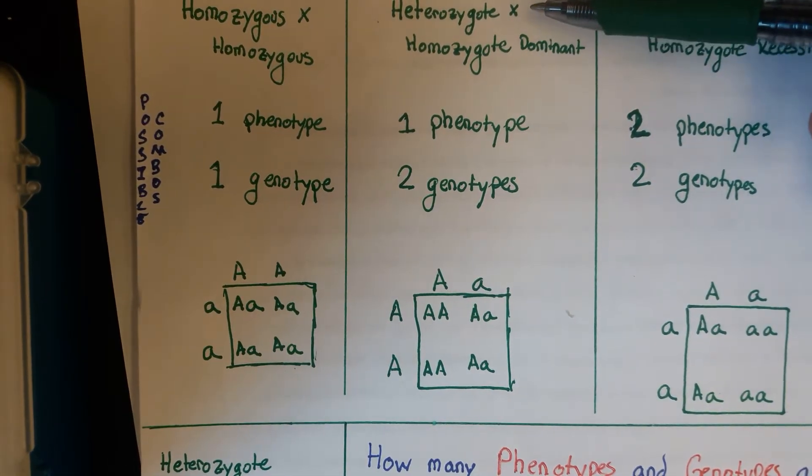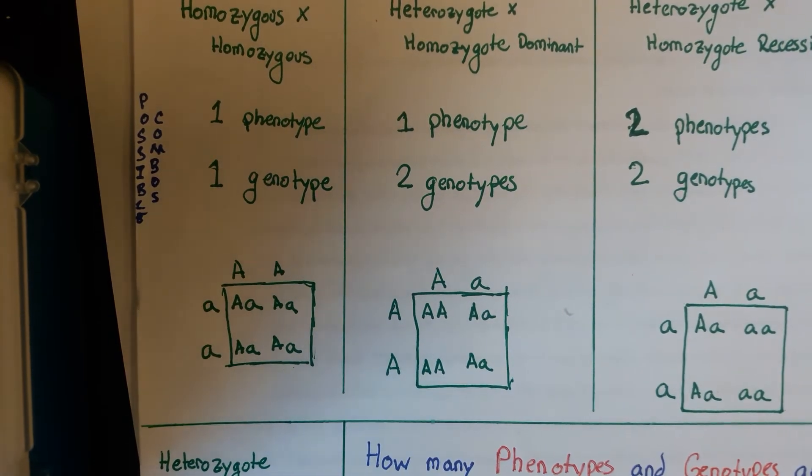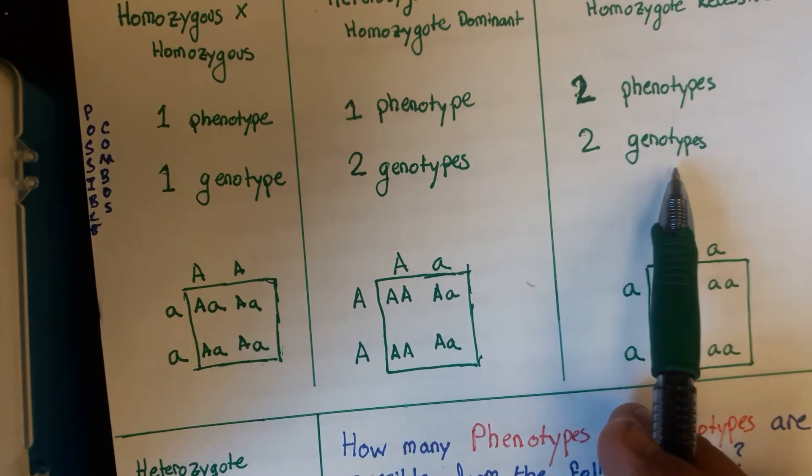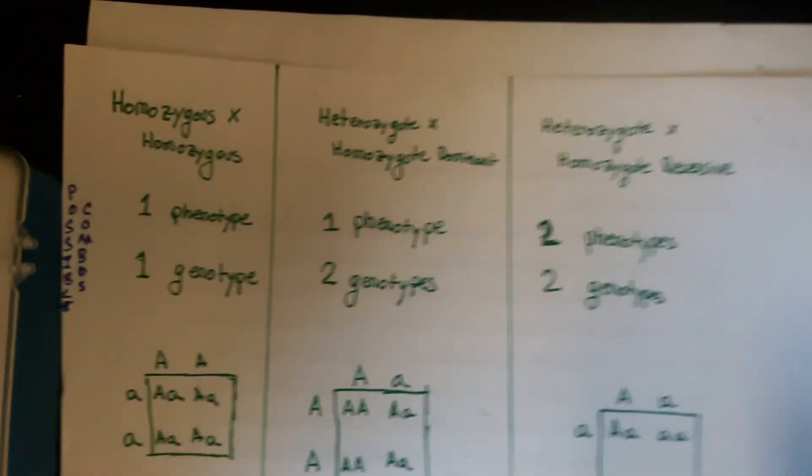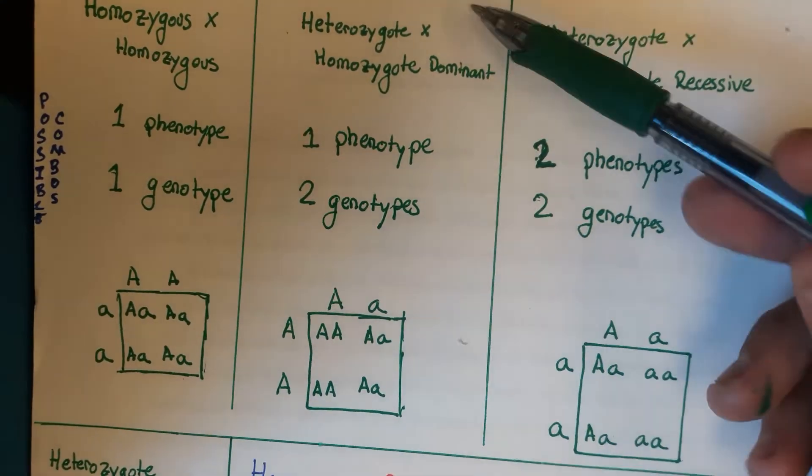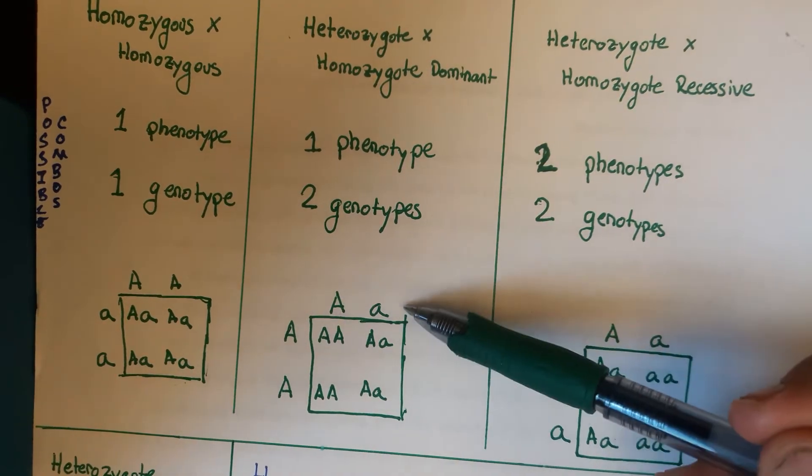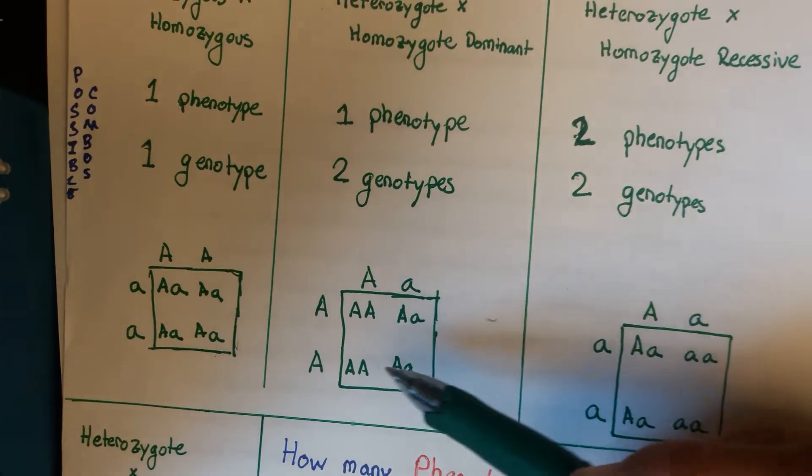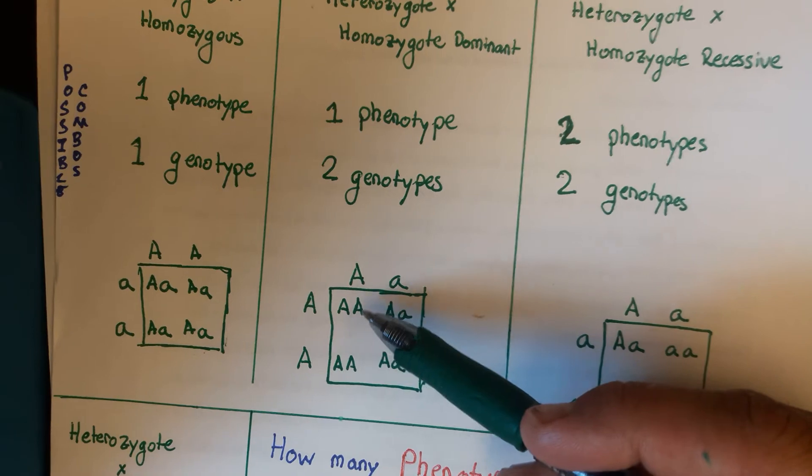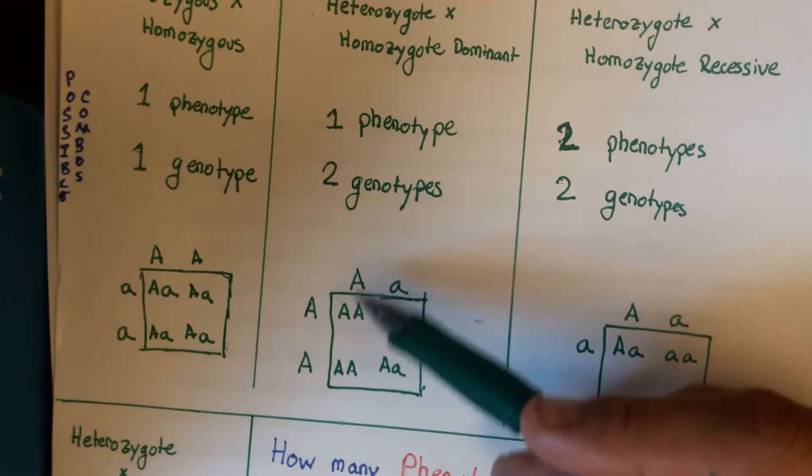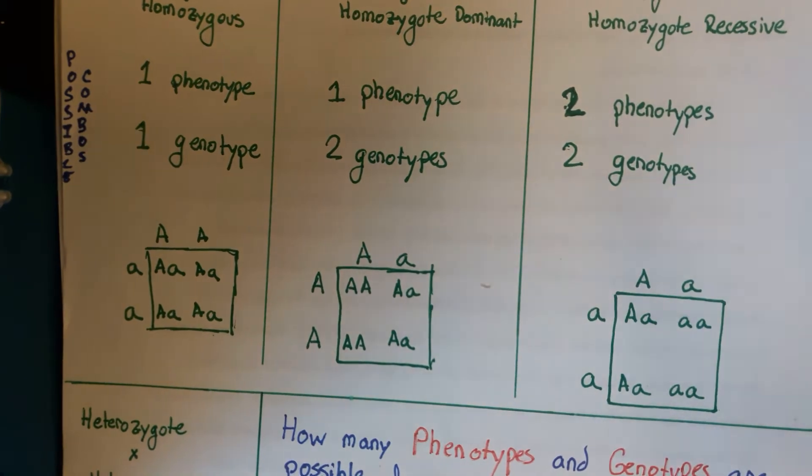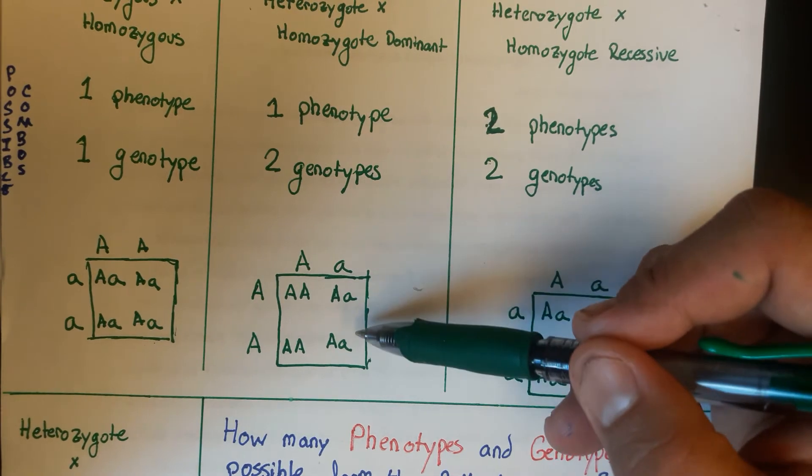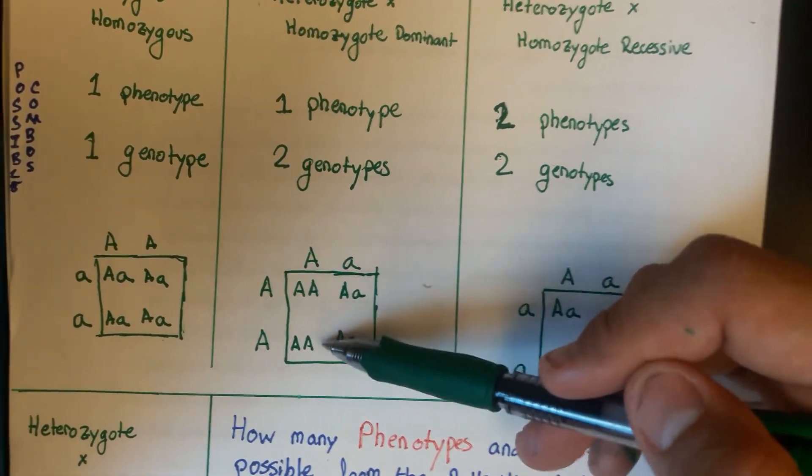And then if you were to cross a heterozygote times either homozygous dominant or homozygous recessive, the number of genotypes stays the same, but the number of phenotypes changes. So let's have a look at that. Here I've crossed a heterozygote times a homozygote dominant. So there's your heterozygote, homozygote dominant. These two right here, big A, big A, and big A, big A, those are going to be your dominant, homozygous dominant. And then these are going to be heterozygote. So you have two genotypes. Now there's only one phenotype that comes from that because the heterozygote has the same phenotype as the homozygous dominant that comes from this cross.